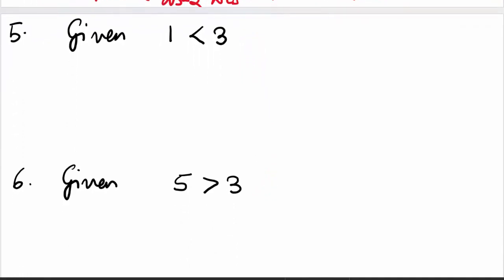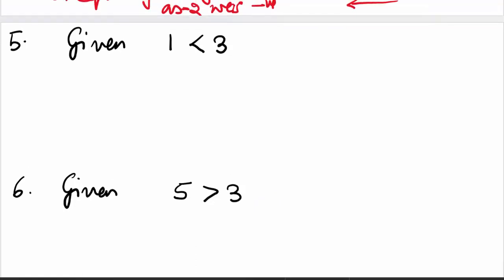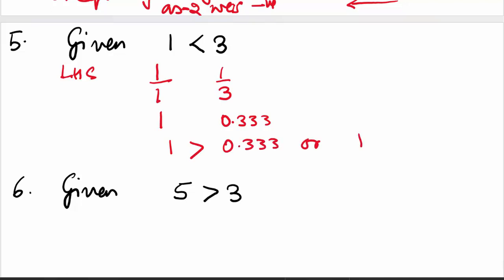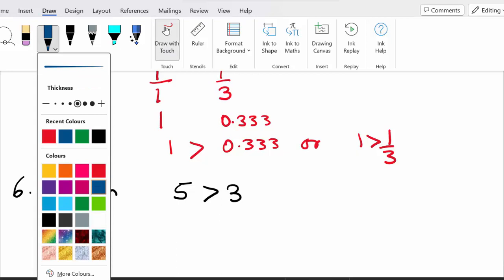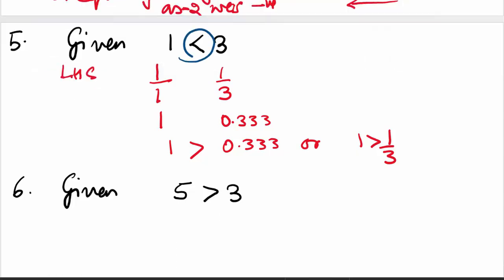Look at the last example for rule 3. Given 1 is less than 3, let's invert this. We get 1/1 on the left-hand side, and 1/3 on the right-hand side. Now 1/1 is 1, and 1/3 is approximately 0.3333. Isn't 1 greater than 1/3? The inequality was 1 less than 3, but on inverting it becomes greater than. So the inequality changed.